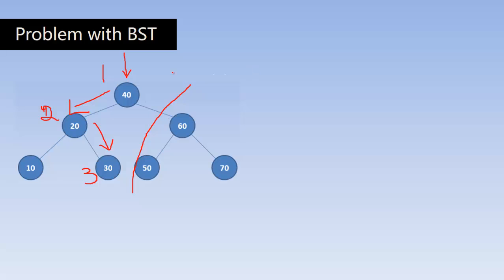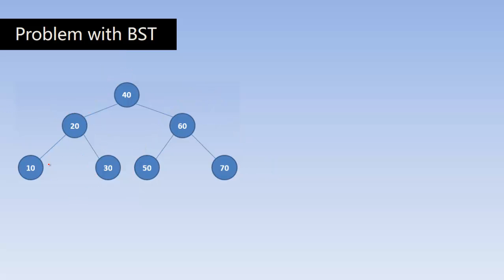So within just three comparisons I got my element. That is when the tree is useful when it is balanced — meaning every node has two children. There are just three levels: level zero, level one, and level two. I found the element in three comparisons, which equals the number of levels. So the time complexity is O(log n).